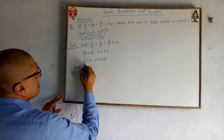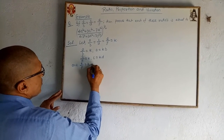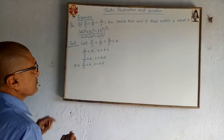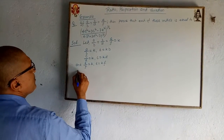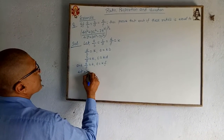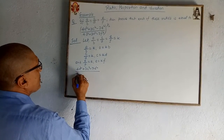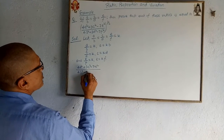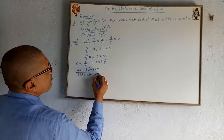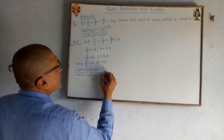Similarly, C by D equal to K gives C equal to KD, and E by F equal to K gives E equal to KF. Now substituting into 4A square plus 3C square minus 7E square by 4B square plus 3D square minus 7F square, to the power 1 by 2.